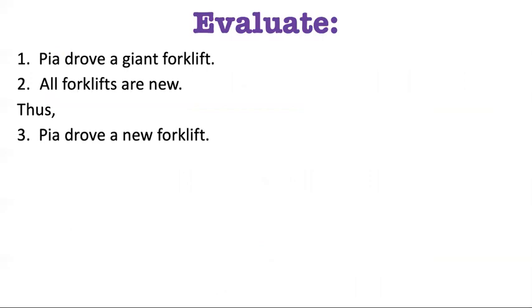Here's an example of an inference that's valid. Let's say Pia drove a giant forklift and all the forklifts are new. Well, of course, that entails Pia drove a new forklift. But if we translate this without enough structure, we're not going to be able to see the validity of this argument.